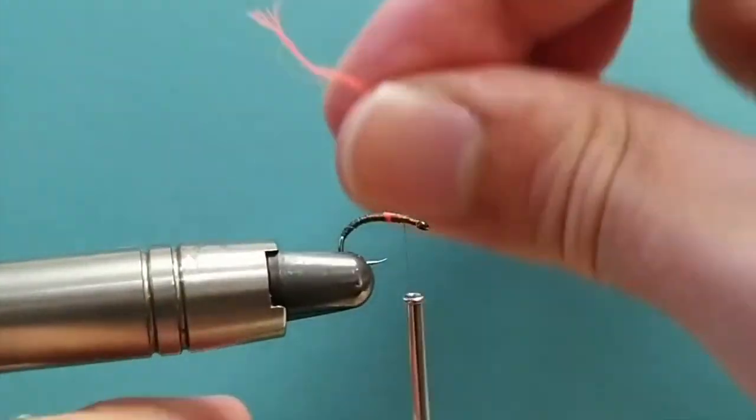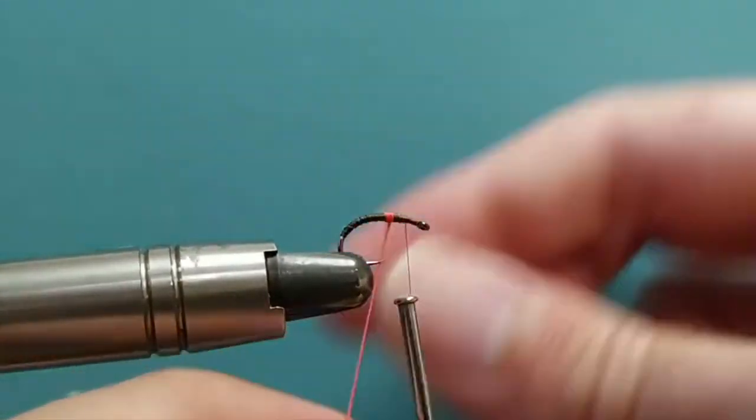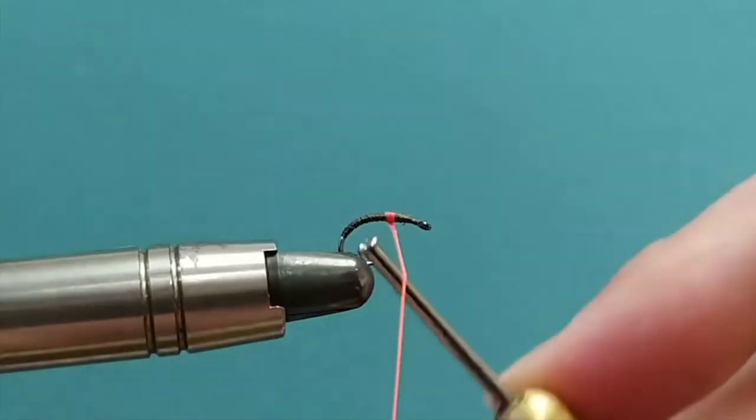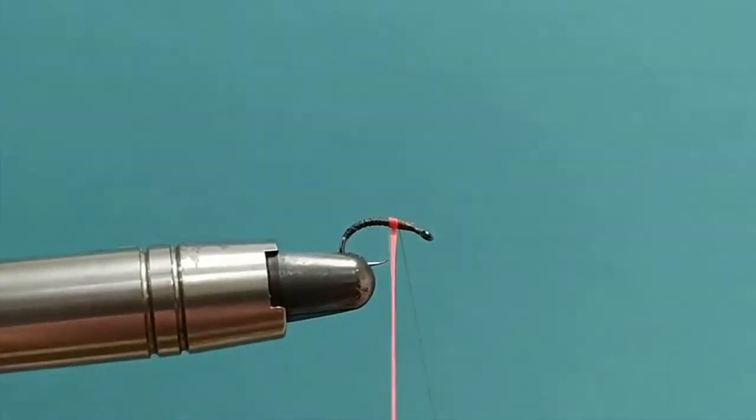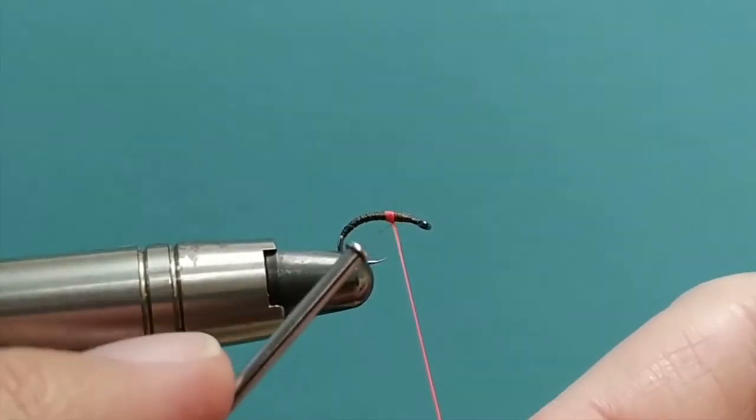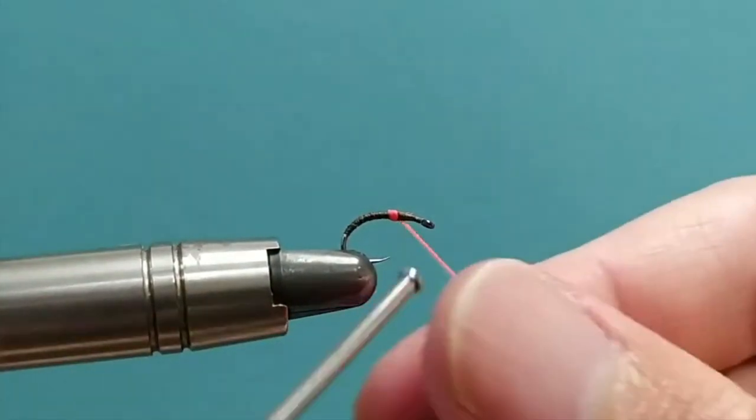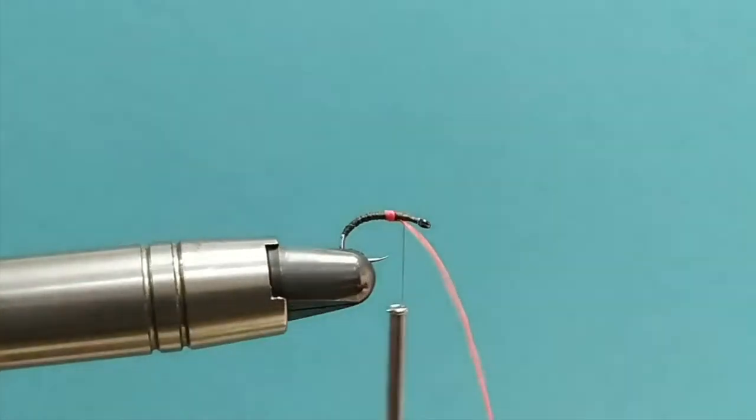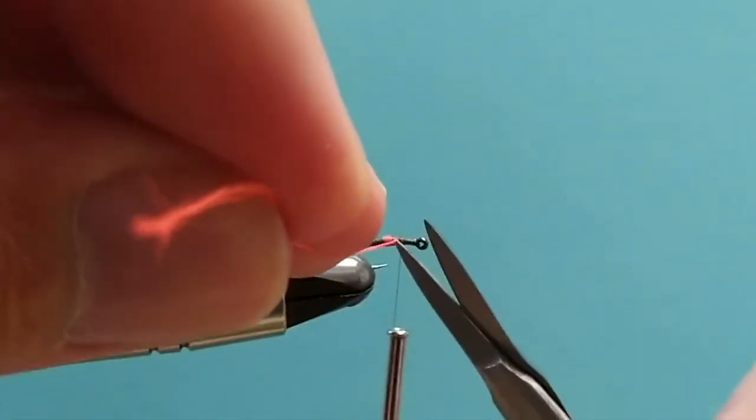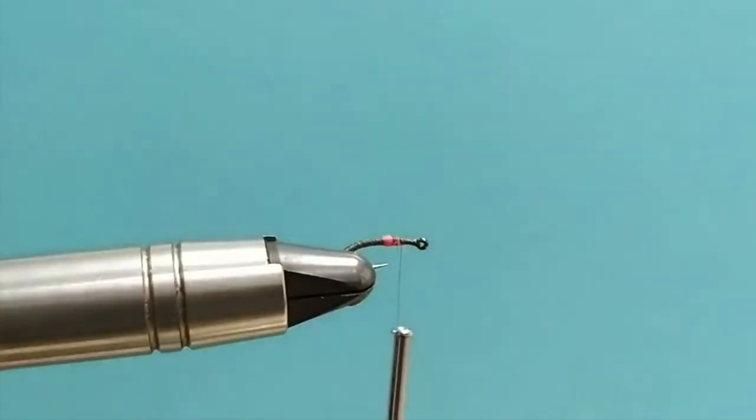I'm just going to do one, two, three, four turns of that floss and then use the thread to catch it in. Come the other side of the floss, catch in, making sure that thread stays tight. Couple of turns to lock it in place and then I can go ahead and trim away the excess of the floss.